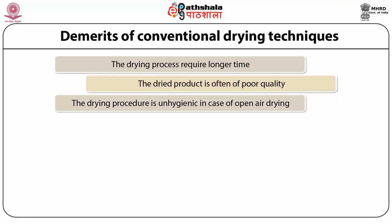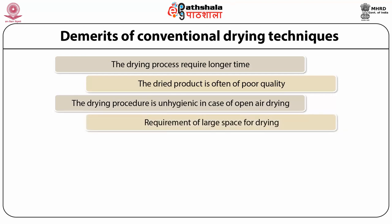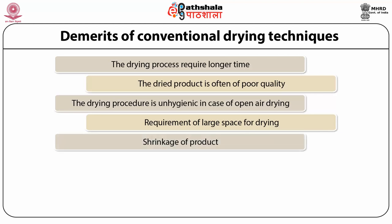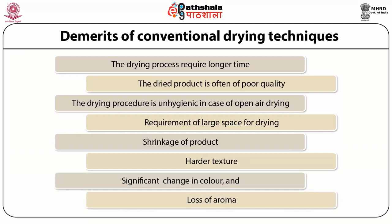In conventional drying like sun drying or open air drying, we need large space. There are chances of shrinkage of the product, as moisture is removed in an uncontrolled way and the fruits and vegetables become shrunk. The texture becomes harder because it is in contact with sun rays and achieves a high amount of heat. There is also loss of color and aroma due to uncontrolled heat application.